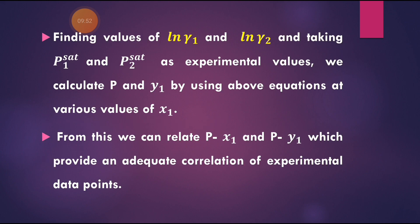By finding the values of ln γ₁ and ln γ₂ and taking P1ˢᵃᵗ and P2ˢᵃᵗ as experimental values, we can calculate P and y1 at various values of x1. First determine ln γ₁ and ln γ₂, then take experimental values P1ˢᵃᵗ and P2ˢᵃᵗ, and substitute into the above equations. This provides an adequate correlation of experimental data points.